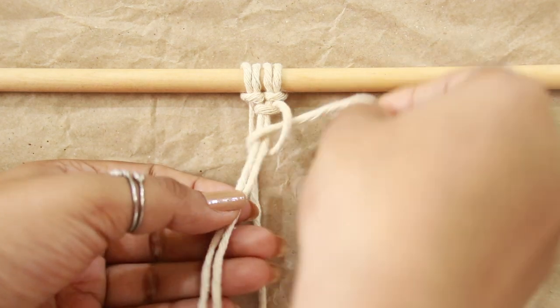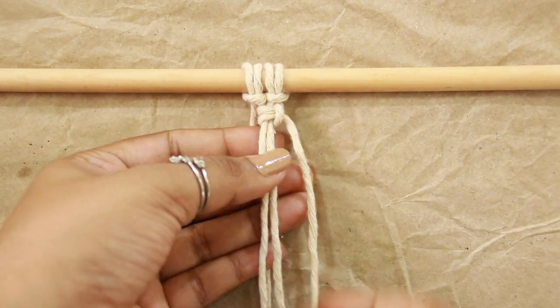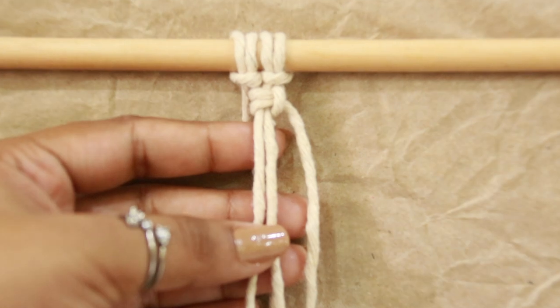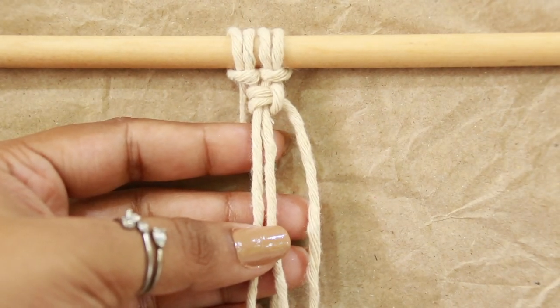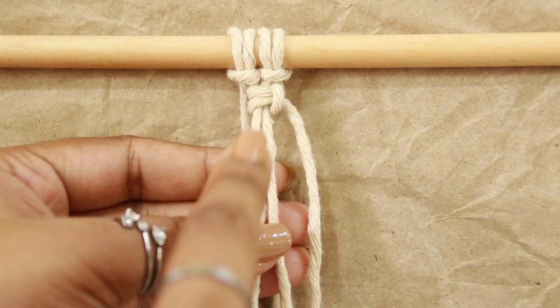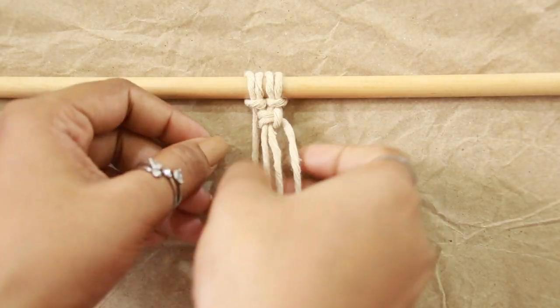This way, you will have one complete vertical lark's head knot on your right side. Here, you can clearly see the difference between horizontal lark's head knot on the top and vertical lark's head knot on the side.